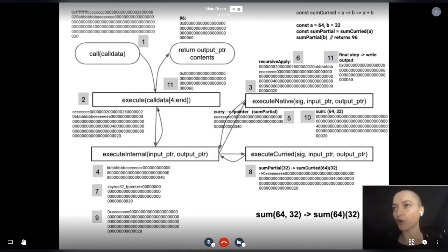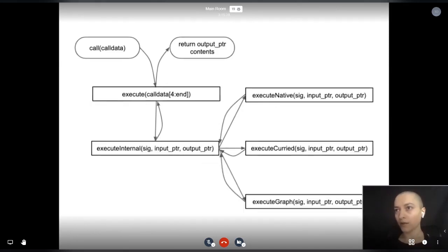In my last article about currying, I explained how the core of the mechanism works. We currently use four byte signatures for types, and all recursive calls go through execute internal. Execute internal tries to call execute native or execute curried depending on a success variable that each of them returns. All native functions reside in execute native in a switch case statement.